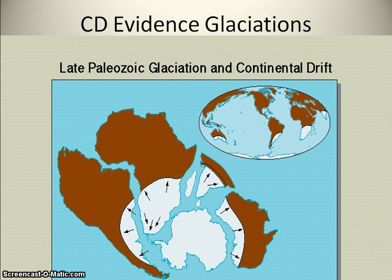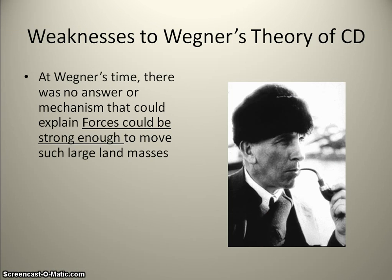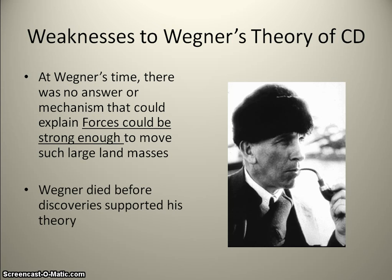Lastly, there's the glaciation evidence. There's evidence pointing to glaciers and remnants of glaciers being present that he said were moving. That said, there were weaknesses — people scrutinized him, people called him crazy. The problem was that at that time no one could answer the mechanism that could move continents so large. Although he had a lot of evidence pointing to his opinions, the problem was that he didn't have a mechanism to explain this. He ended up dying before his discoveries were supported.